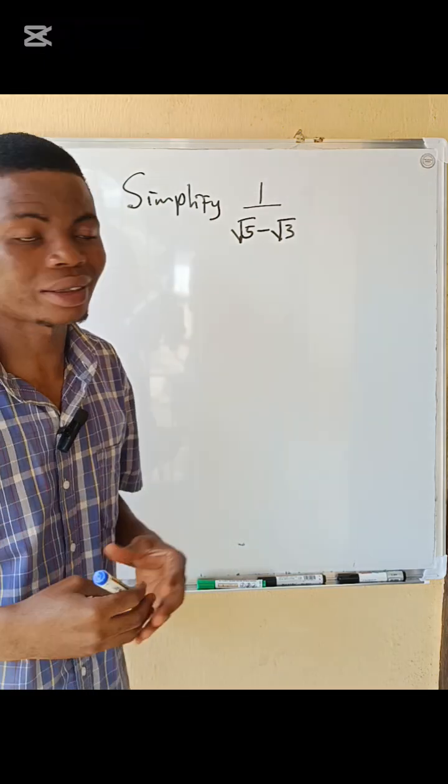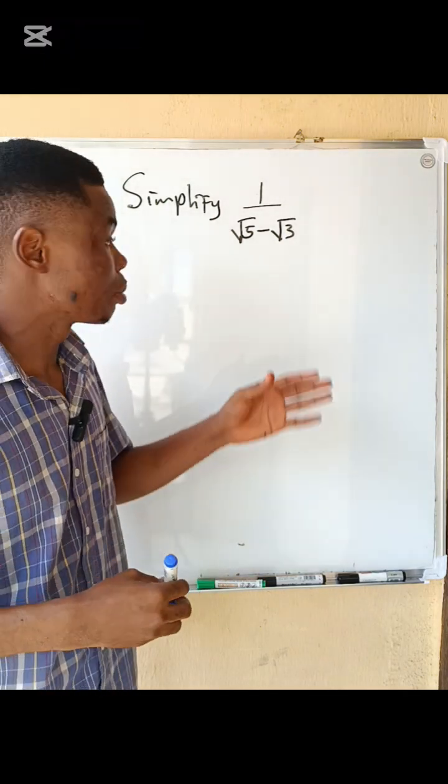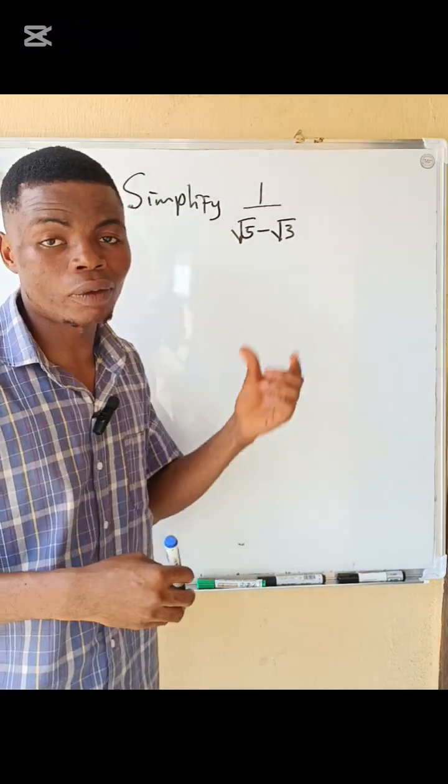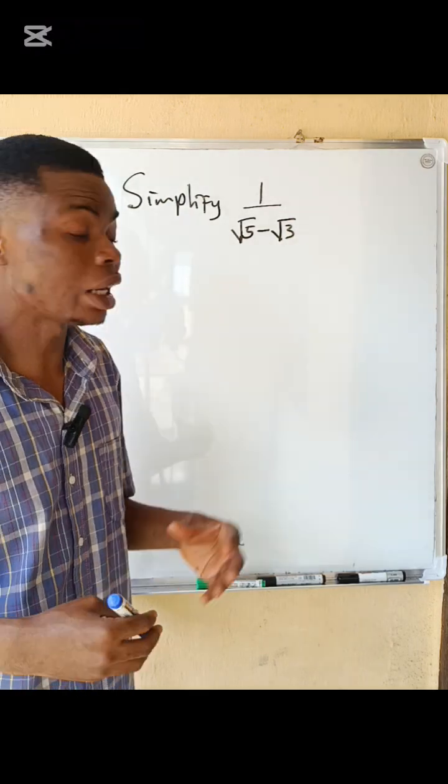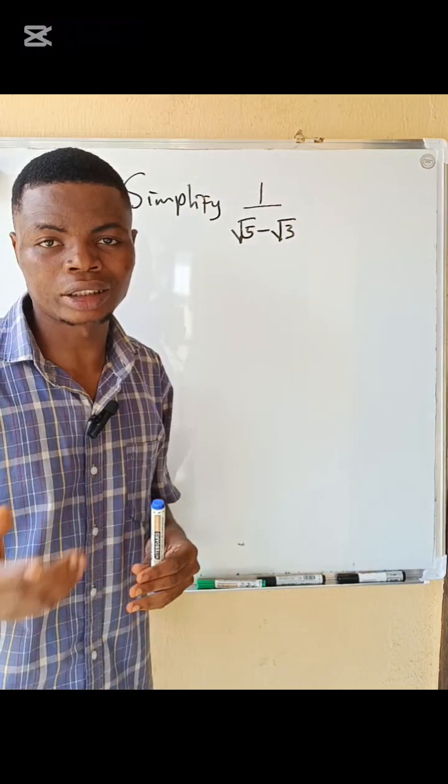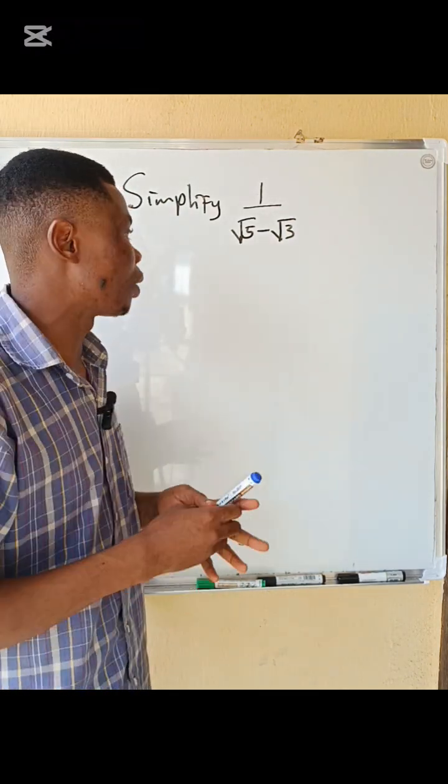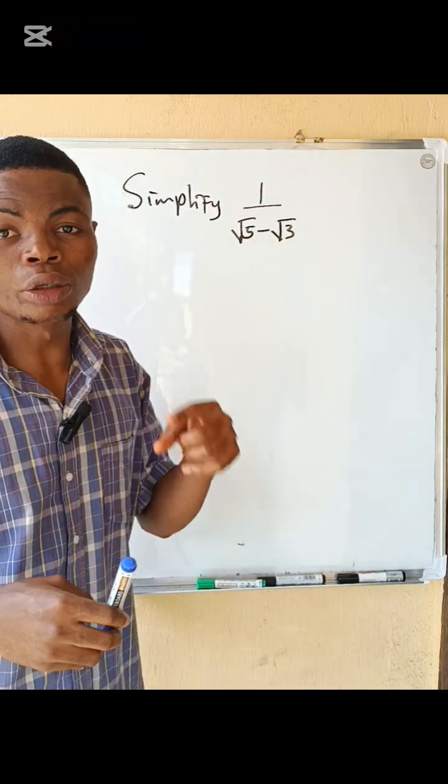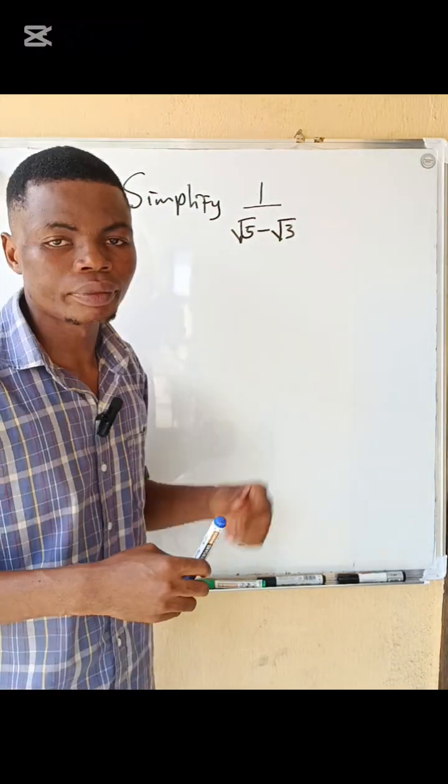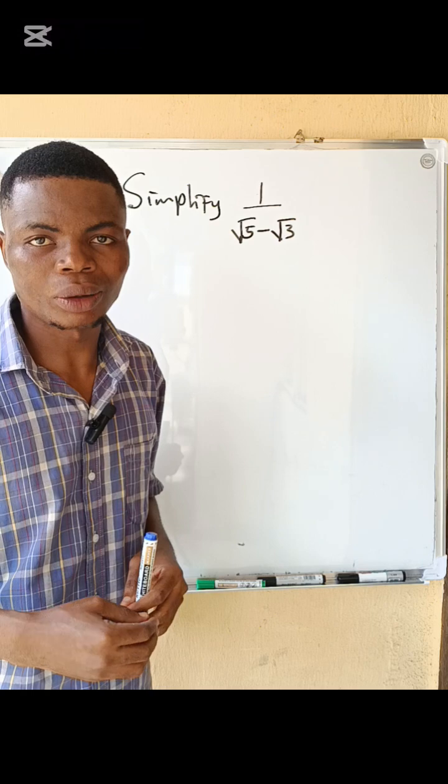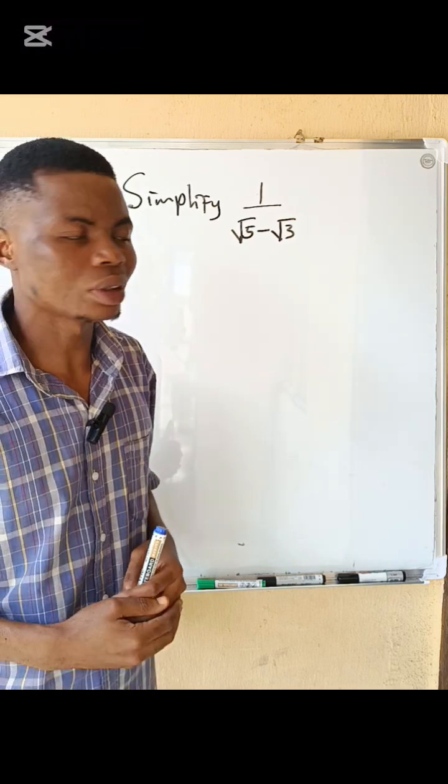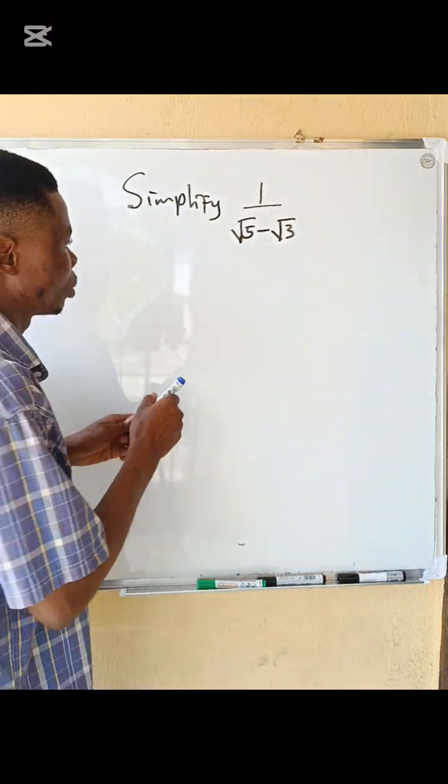You have to rationalize this expression because at the denominator we have irrational numbers. Before you can solve it, you need to rationalize to remove these irrational numbers from the denominator. Let's see the solution.